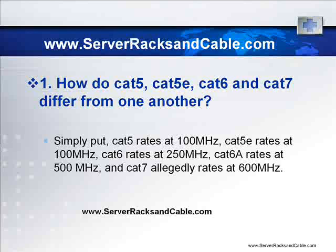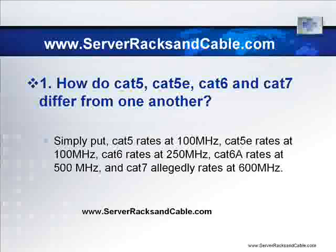First question: how do Cat5, Cat5e, Cat6, and Cat7 differ from one another? Simply put, Cat5 rates at 100 MHz, Cat5e rates at 100 MHz, Cat6 rates at 250 MHz, Cat6a rates at 500 MHz, and Cat7 legally rates at 600 MHz.